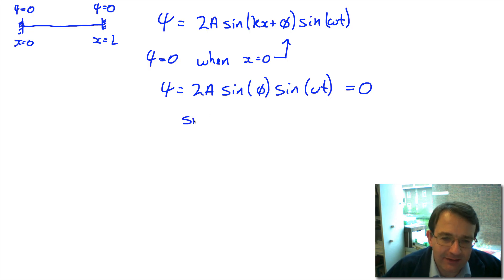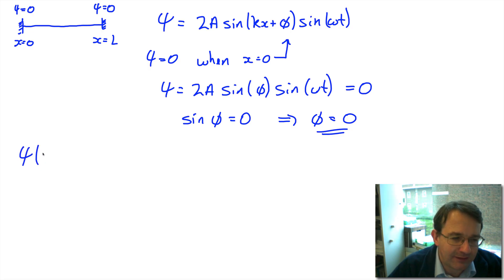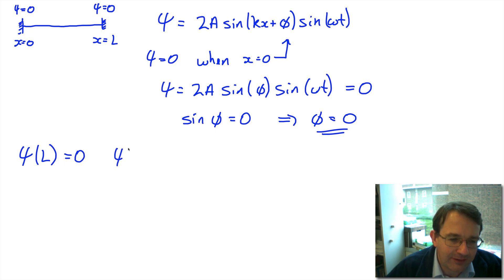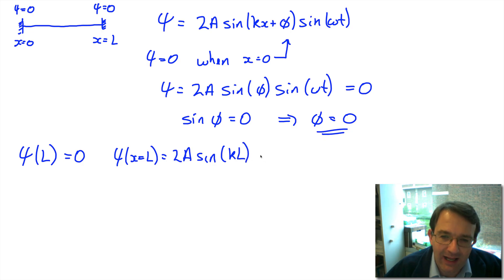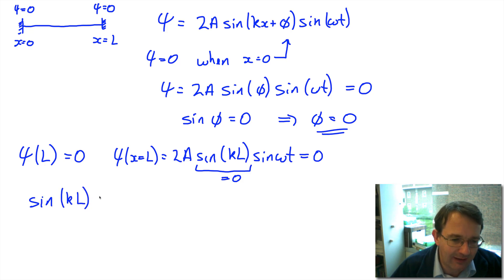The easiest way to satisfy sine(φ) = 0 is to set φ = 0. Now applying the second boundary condition — displacement equals zero at x = L — gives ψ = 2a times sine(kL) times sine(ωt). For this to be zero for any value of time, we need sine(kL) = 0.